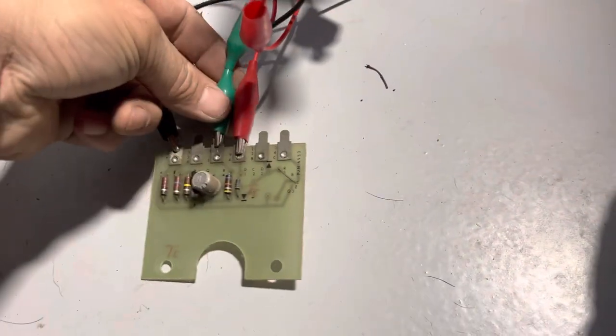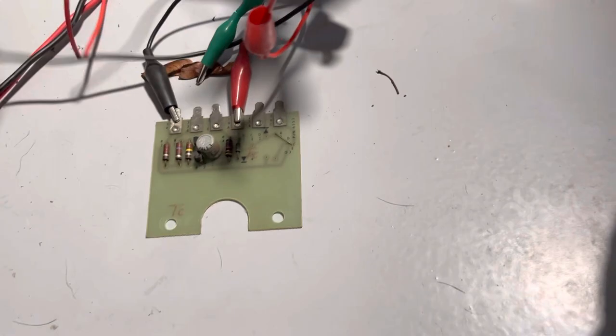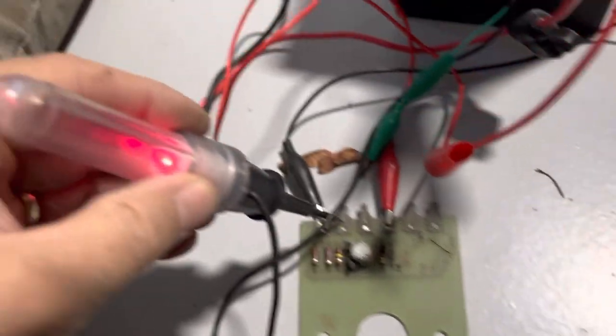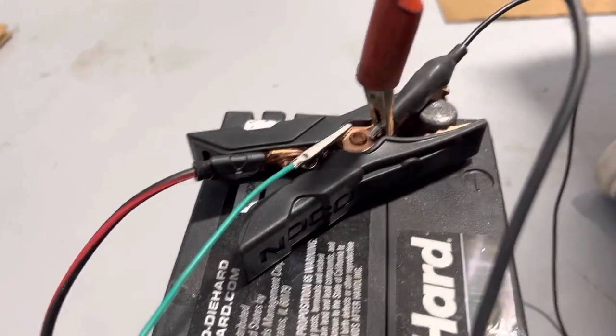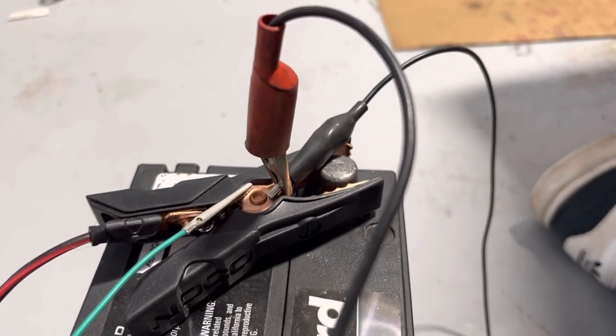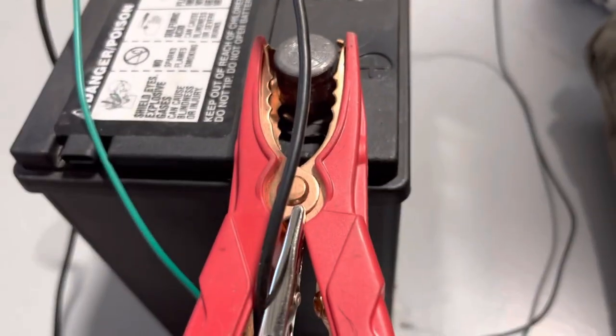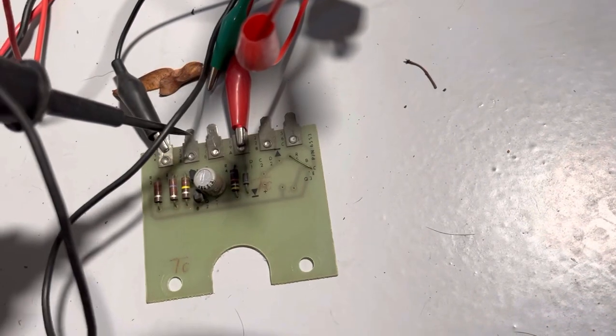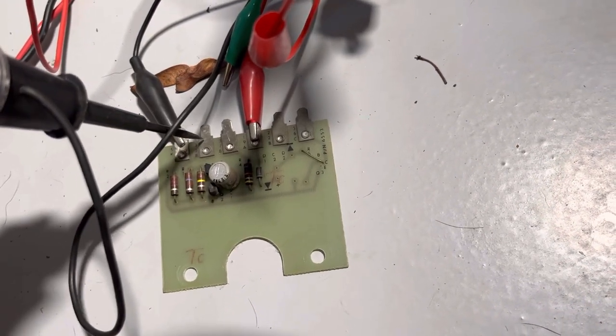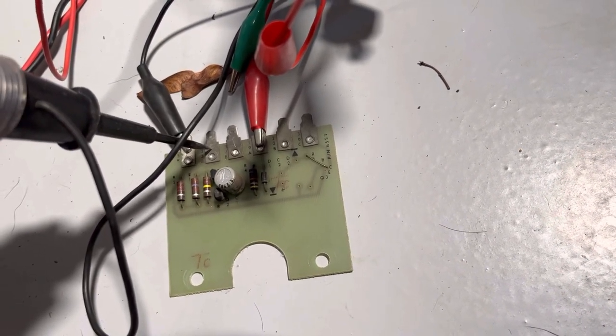And I should just double check this. It's on no matter what. I've got the green connected to negative, and so no matter what happens here, this is putting power to the light.